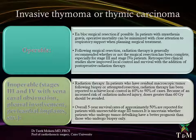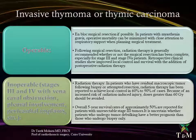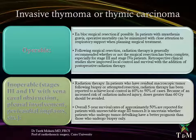For invasive thymoma or thymic carcinoma, if the case is operable, en-bloc surgical resection is possible. In patients with myasthenia gravis, operative mortality can be minimized with close attention to respiratory support. Following surgical resection, radiation therapy is generally recommended whether or not the surgical resection has been complete, especially for Stage 3 and Stage 4a patients. Retrospective clinical studies showed improved local control and survival with the addition of post-operative radiation therapy. For inoperable Stage 3 and 4 with superior vena cava obstruction, pleural involvement, or pericardial implants, radiation therapy has achieved local control in 60% up to 90% of cases; doses should not exceed 60 Gy to reduce radiation-induced injury. The overall 5-year survival rate of approximately 50% is reported for unresected Stage 3 tumors.